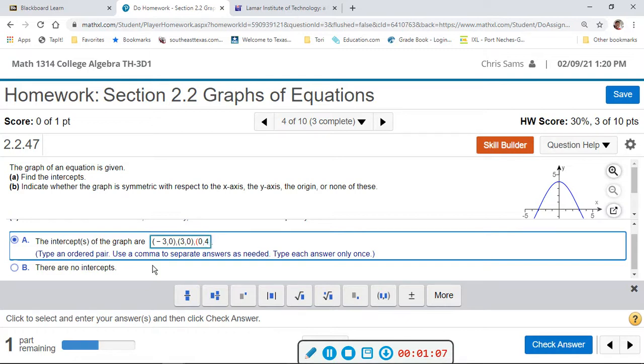So zero, four. These are our intercepts: negative three, zero; positive three, zero; and zero, four.